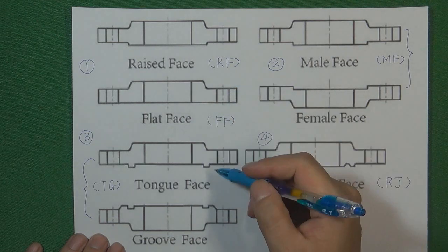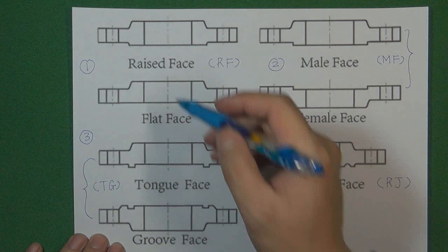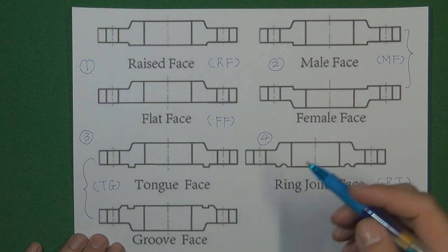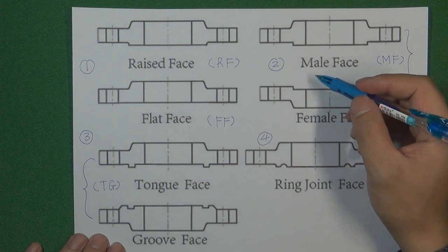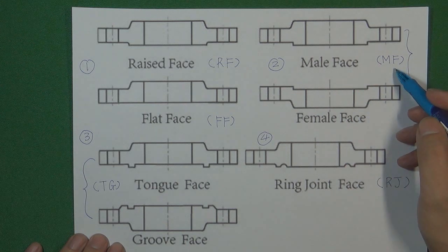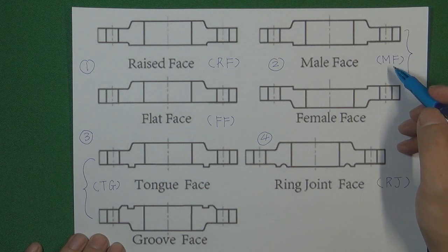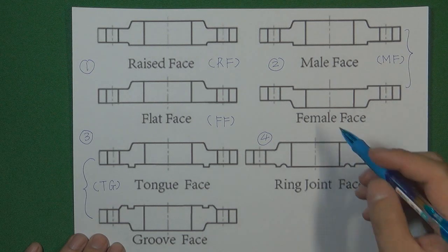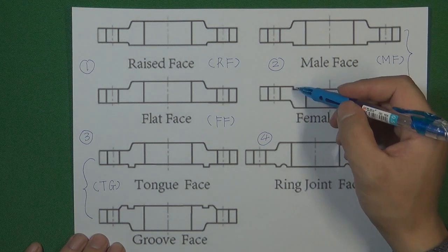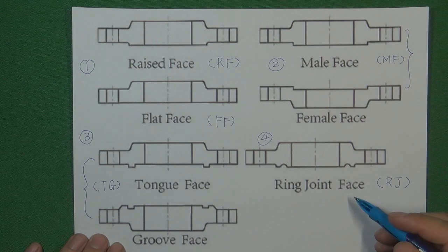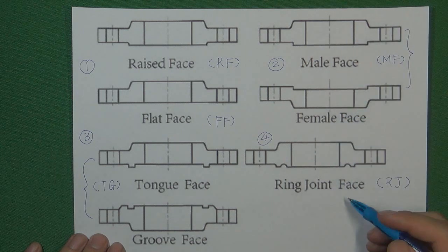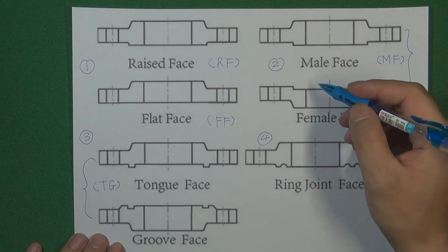But when the pressure gets higher, the inside pressure will push and even break the gasket, causing a leak. So we need to protect the gasket from being broken by the pressure. We invented a connection called MF (male-female). In MF connection, we put the gasket in the female face, whose step will protect the gasket. Then the male face cooperates with the female face to make the connection, protecting the gasket inside.